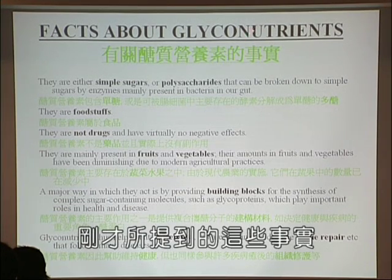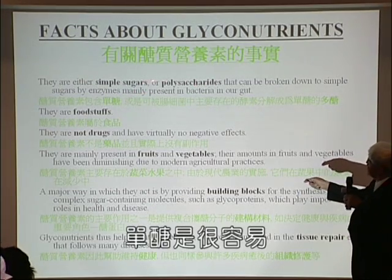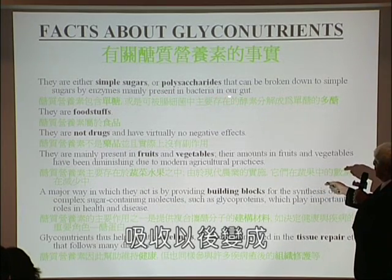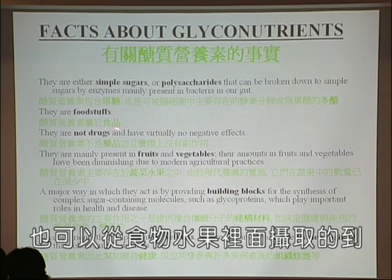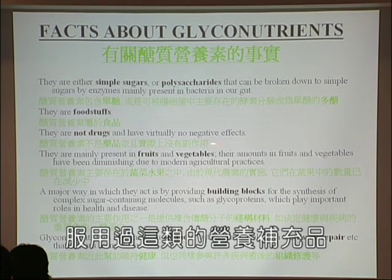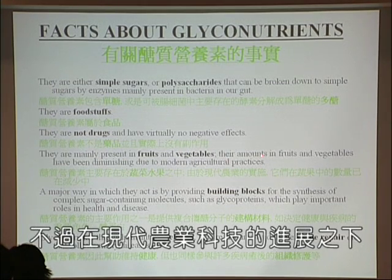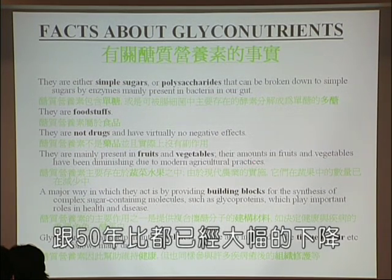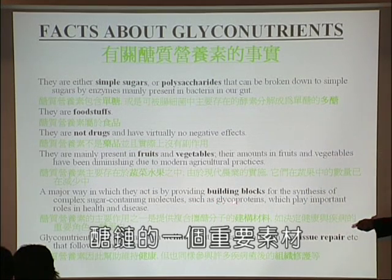Here are some facts about glyconutrients. They are either simple sugars — the eight sugars I described — or polysaccharides that can be broken down to simple sugars by enzymes mainly present in bacteria in our gut. They are foodstuffs, not drugs, and have virtually no negative effects. Millions and millions of doses of Ambritos have been taken by people around the world and there has not been one serious negative effect. They are mainly present in fruits and vegetables, whose nutrient content has declined markedly over the last 50 years. The simple sugars are used as building blocks to build up sugar chains such as those present in glycoproteins.